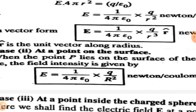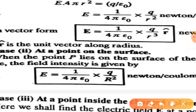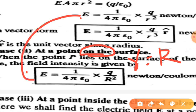The second case is the Electric Field Intensity at a point on the sphere. In this case, the point lies on the sphere, so the distance between the center and the point P is capital R — that is, small r becomes capital R. Substituting capital R in place of small r, we get E equals 1 by 4 pi epsilon-naught times Q by capital R-squared. This is the Electric Field Intensity at a point on the surface.